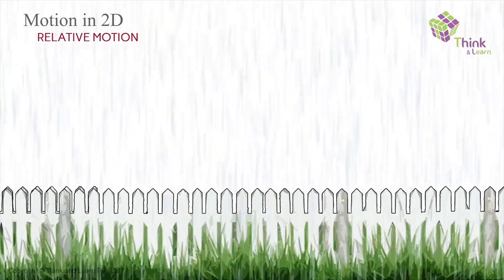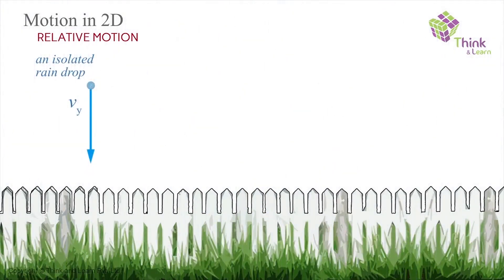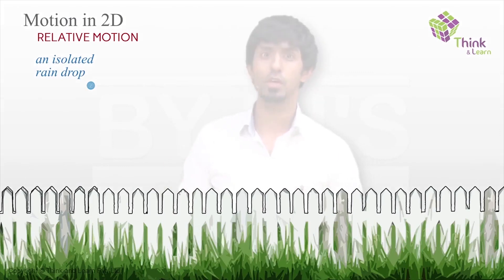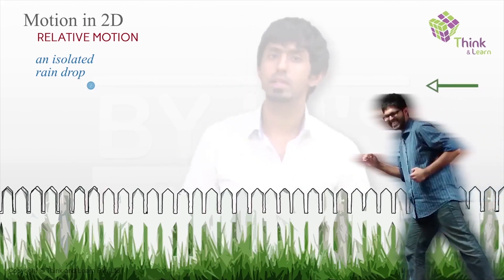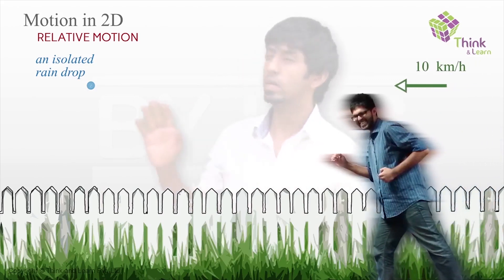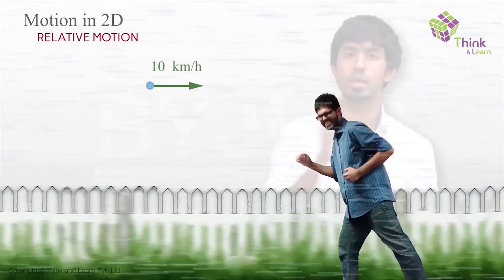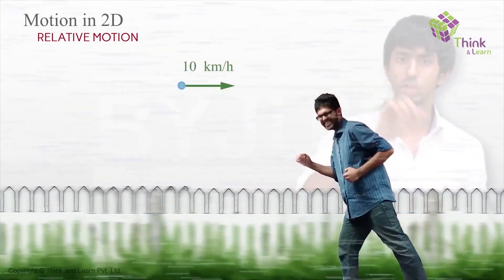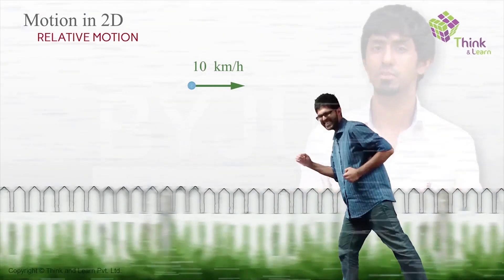How do we extend this to the rain question? If you were to stop gravity for a moment and also stop the raindrop so its vertical velocity is zero, the raindrop looks weirdly stationary, floating in the air. Now start running towards it at some speed — say 10 kilometers per hour. Because you assume you're at rest, it's as if someone turned on a conveyor belt and the raindrop is moving toward you at 10 kilometers per hour — simple 1D relative motion.